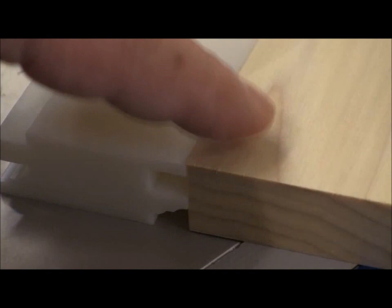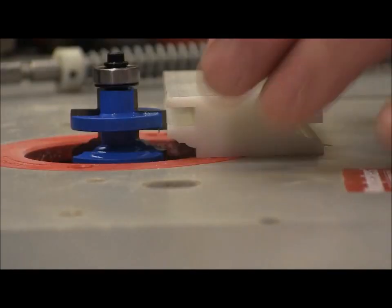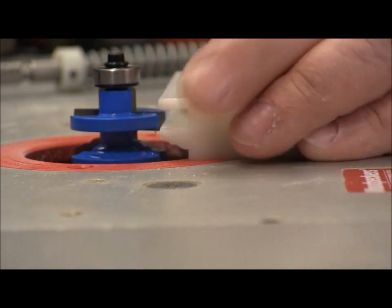Some of the setup blocks do have one inch sections that are meant to be used with thinner material. Using the Rockler router bit setup jigs couldn't be any easier. You just lay it flat on the table surface and adjust the bit height until the block slips over the cutters.